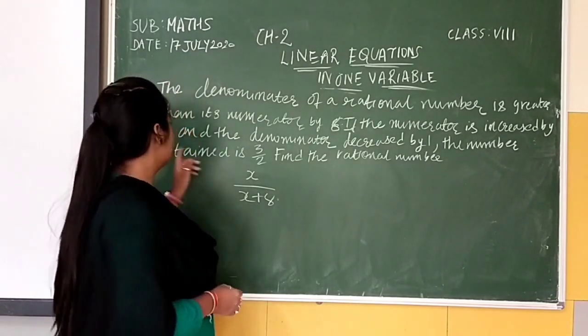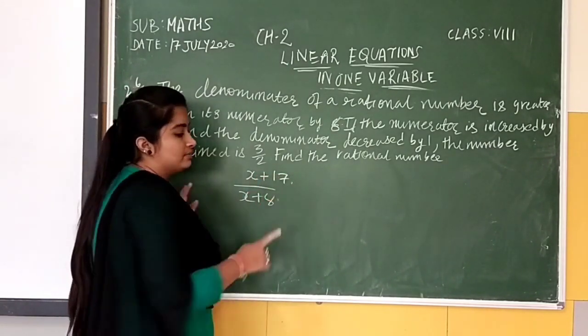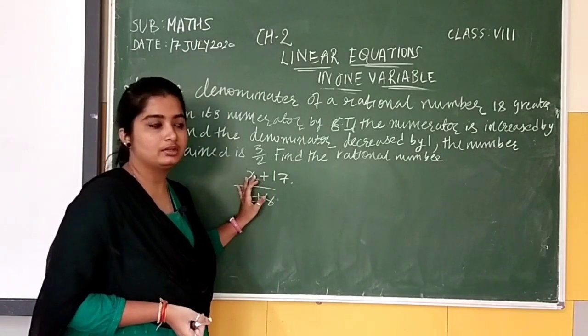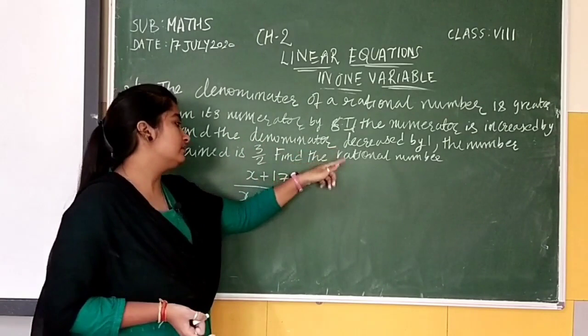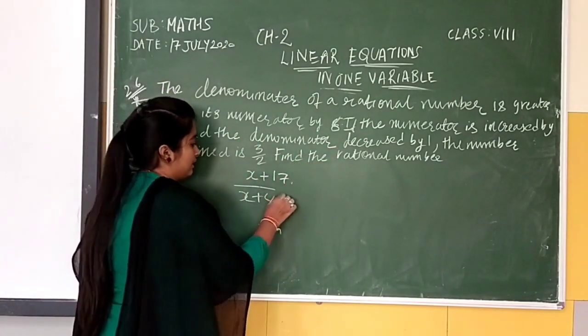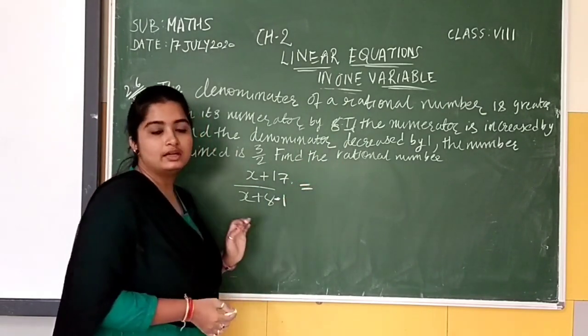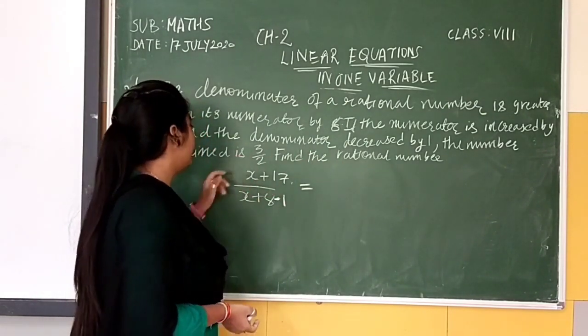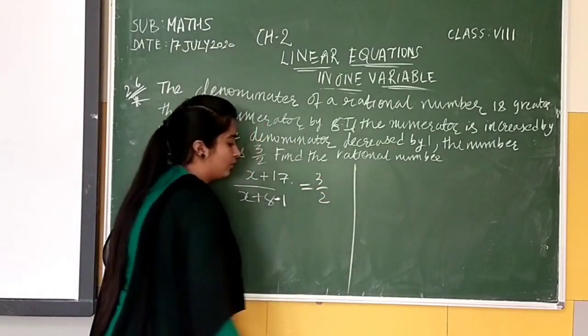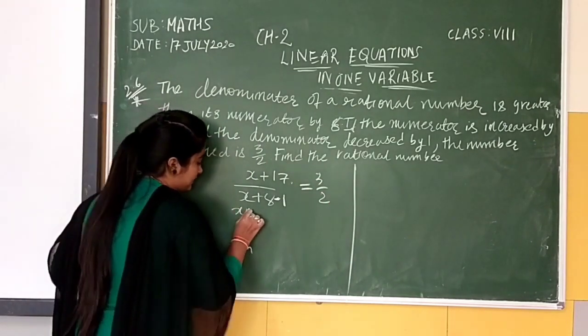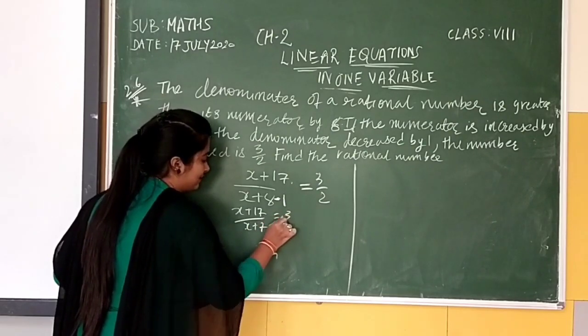If the numerator is increasing by 17, hameh yaha pere 17 karna hai, increasing matlab 17 hummeh zyada karna hai numerator mein. Denominator decreasing by 1, so it will be 8 minus 1. Hameh jo result milta hai, woh kya milega? Hameh diya gaya number 3 by 2. So joh equation hai, woh form ho gaya yaha hamaara. Yaha hummeh ho jayega X plus 17 upon X plus 7 equal to 3 by 2.